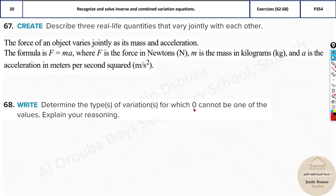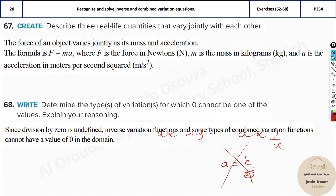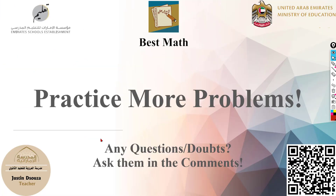Determine the types of variation for which zero cannot be one of the values. In direct variation, applying zero is fine. But in inverse variation — A equals K divided by x — if x equals 0, the expression is undefined. Since division by zero is undefined, inverse variation functions and combined variation functions cannot have zero in their domain. That concludes question number 20, which focuses mainly on reasoning. Understanding direct, inverse, joint, and combined variation thoroughly will make these problems easy.